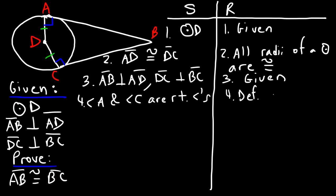In step five, we could say that angle A is congruent to angle C, and the reason is that right angles are congruent to each other.